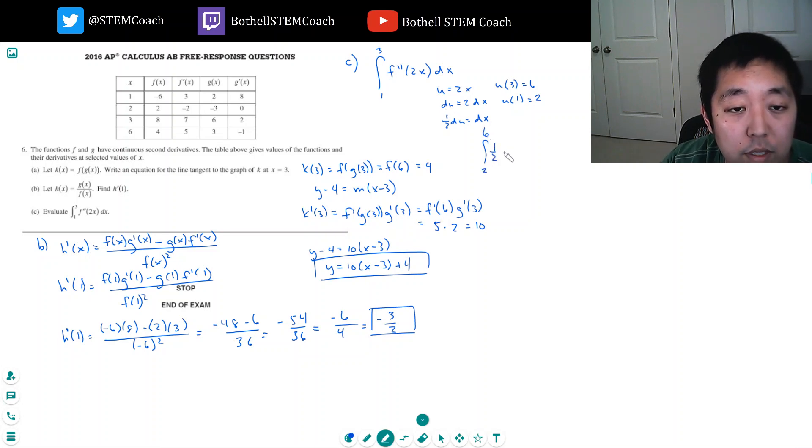So this becomes the integral from 2 to 6 of one half times f double prime of u du. Bring out the one half. I do the anti-derivative, it's just f prime of 6 minus f prime of 2.